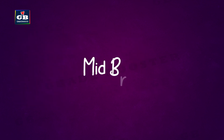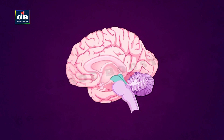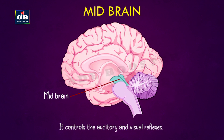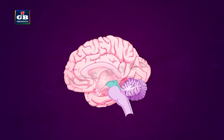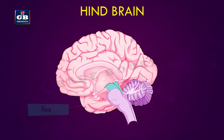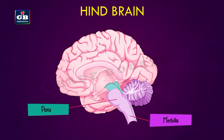The midbrain controls the visual and auditory reflexes. It also has a center for controlling the movements of our eyes and eyelids.